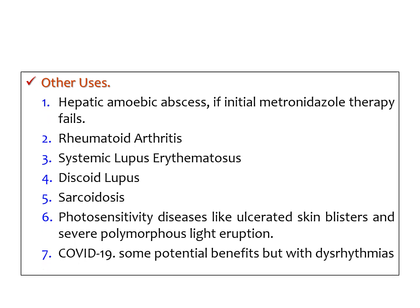Regarding non-malarial uses of chloroquine: there is a long list. We have seen its role especially in hepatic amoebic abscess, particularly when initial metronidazole therapy fails. Chloroquine has also been useful in rheumatoid arthritis, systemic lupus erythematosus, discoid lupus, sarcoidosis, and even photosensitive diseases like ulcerated skin blisters and severe polymorphous light eruption. Currently, some potential benefits have been seen in COVID-19 infection, but its potential to produce dysrhythmias is also a very serious consideration.